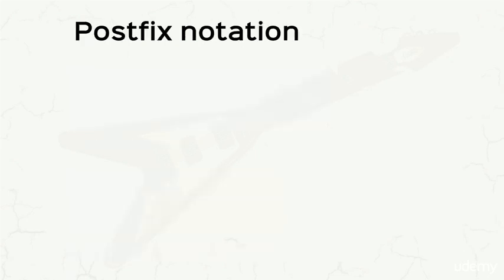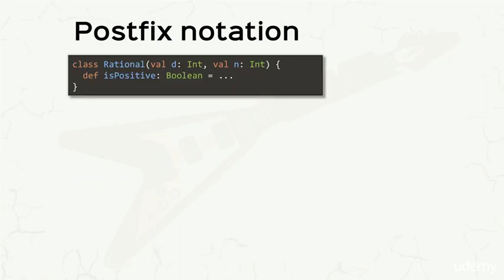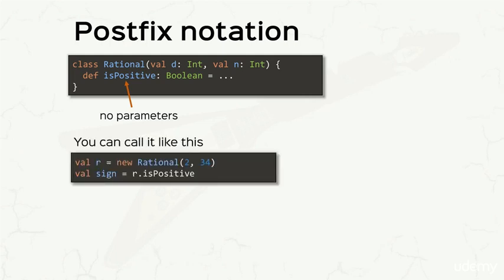Let's talk now about postfix notation. For example, we have the same Rational class that you're familiar with, and this time we define a method isPositive, which doesn't receive any parameters and returns a boolean. The fact that this method doesn't receive any parameters gives it a special property. Take a look at this block of code, where we create a Rational with some parameters and we call isPositive on the object r. This is all well-known.